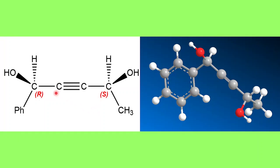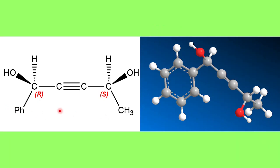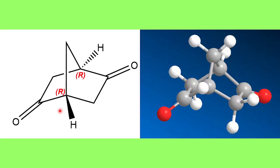In this molecule again you can see that there are two chiral centers — that is a carbon which is attached to four different groups — and this is more clearly visible in the ball and stick model. So this molecule is also chiral and it will show stereoisomerism.